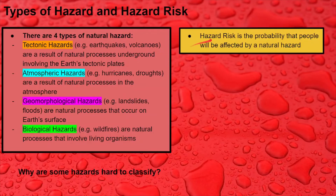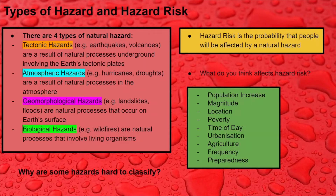Hazard risk is the probability that people will be affected by a natural hazard. High hazard risk means a high chance that people will be affected; low hazard risk means a low chance. We need to look at the factors affecting hazard risk — you don't need to remember all of them; just remember two or three and be prepared to explain them for two, three, or four marks.